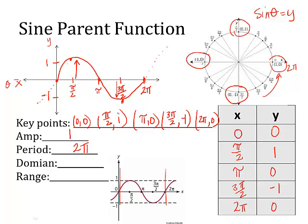The domain: what's the lowest x value? Well, we said this goes on forever, so it will go to negative infinity, and keeps going in the right-hand direction to positive infinity. For the range, the lowest y value it's going to hit is negative one — and it includes negative one because it exists there. The highest y value is positive one, including positive one because it exists there.